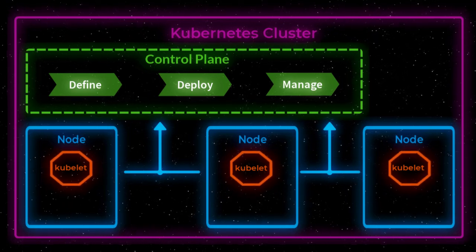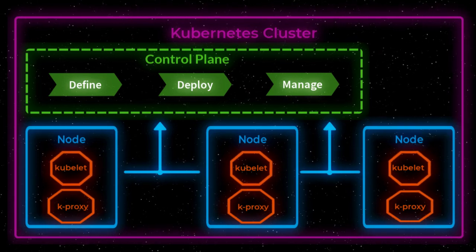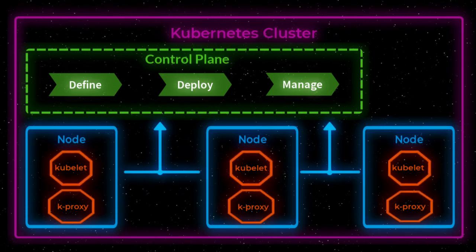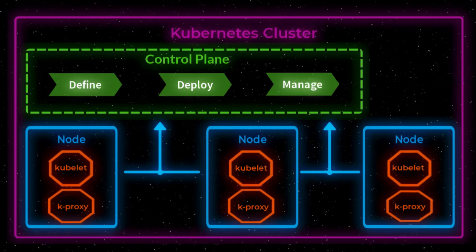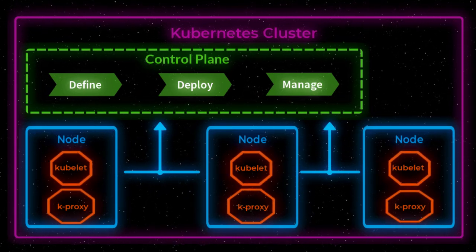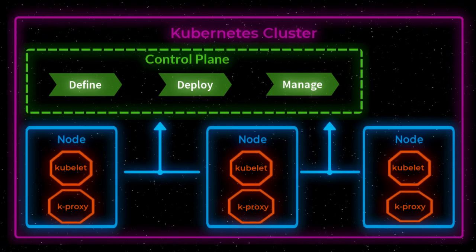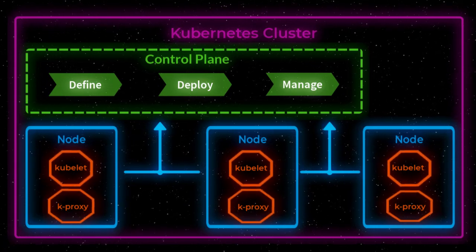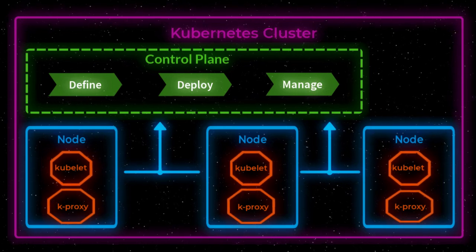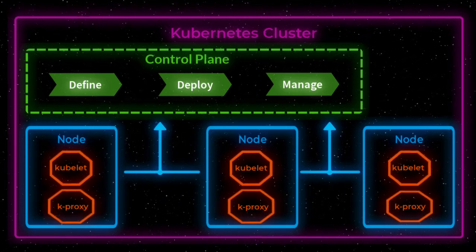Another component within a node is a kube proxy. It implements parts of the Kubernetes service concept, which describes the way of exposing an application container running within a node. The kube proxy maintains network rules on nodes, which allow network communication to your pods from within, but also outside of your cluster.